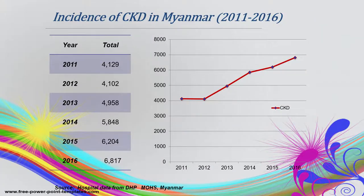According to Ministry of Health hospital status data, the number of CKD patients admitted to government hospitals is increasing year by year. This slide diagram clearly shows that the number increased from 2011 to 2016.